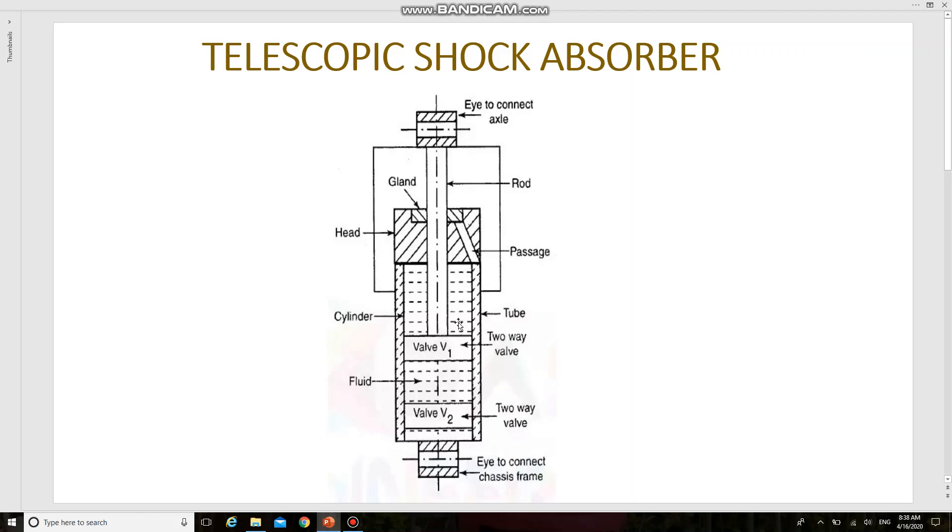Due to less volume of space above the valve v1, the space will get reduced. Because of the volume of the rod, the pressure is exerted on the valve v2. Thus, the damping force is produced by this pressure of the fluid.